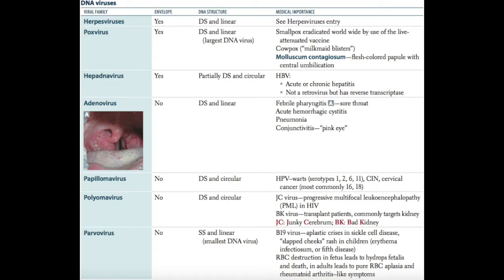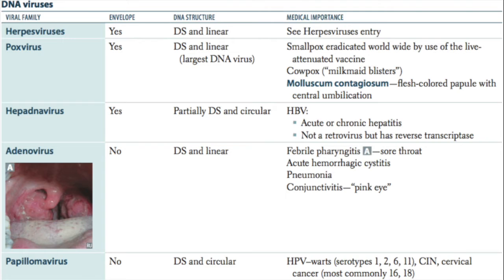Polyomavirus is also non-enveloped with a circular double-stranded genome. Its important virus is the JC virus, which causes progressive multifocal leukoencephalopathy (PML), typically seen in HIV patients. Remember that Papillomavirus and Polyomavirus are two new classifications — they were originally grouped together as Papovavirus.